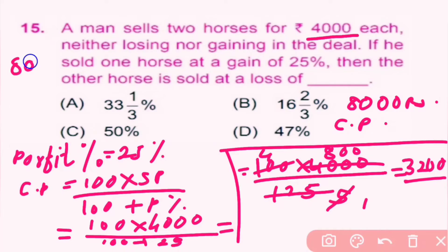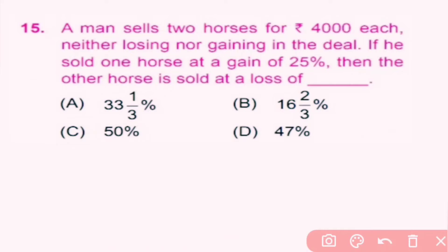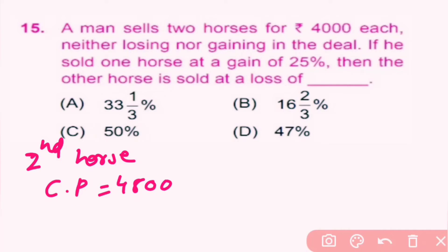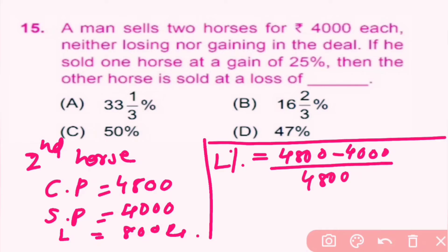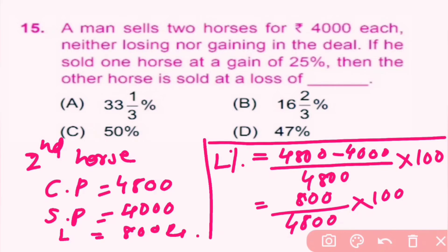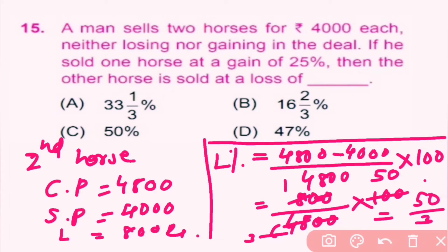The cost price of the other horse is 8,000 minus 3,200, which gives 4,800. For the second horse, cost price is 4,800 and sale price is 4,000, so there is a loss of 800. Loss percentage equals cost price minus sale price divided by cost price into 100, which is 800 divided by 4,800 into 100. Simplifying gives 50/3, which as a mixed fraction is 16 and 2/3 percent loss. B is the correct answer.